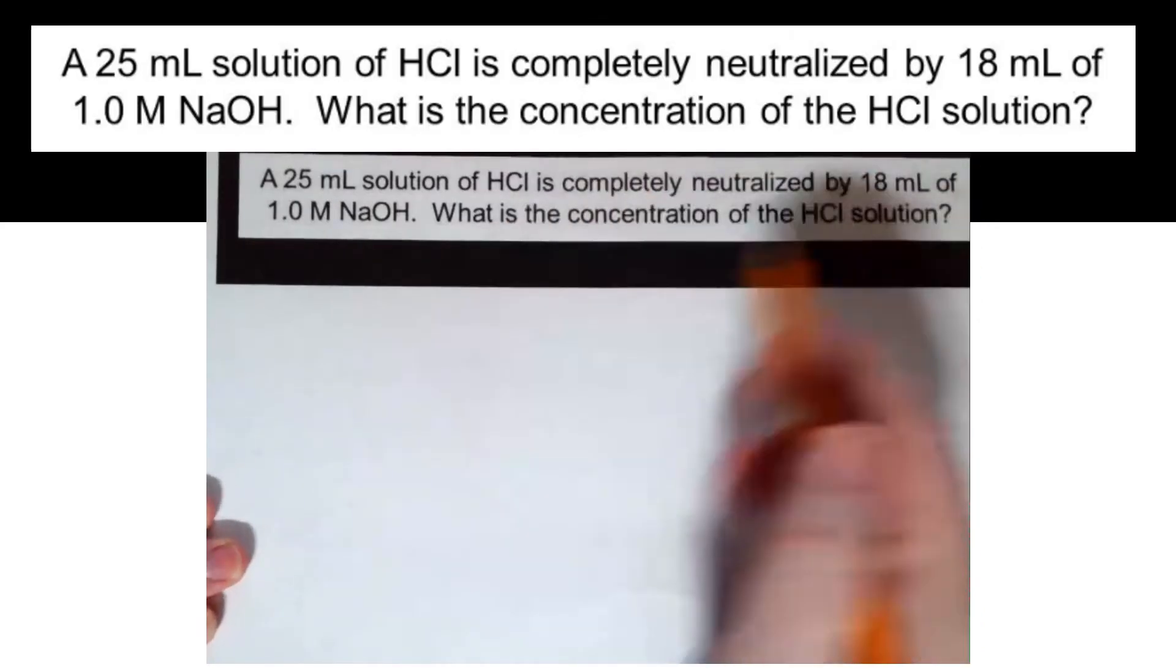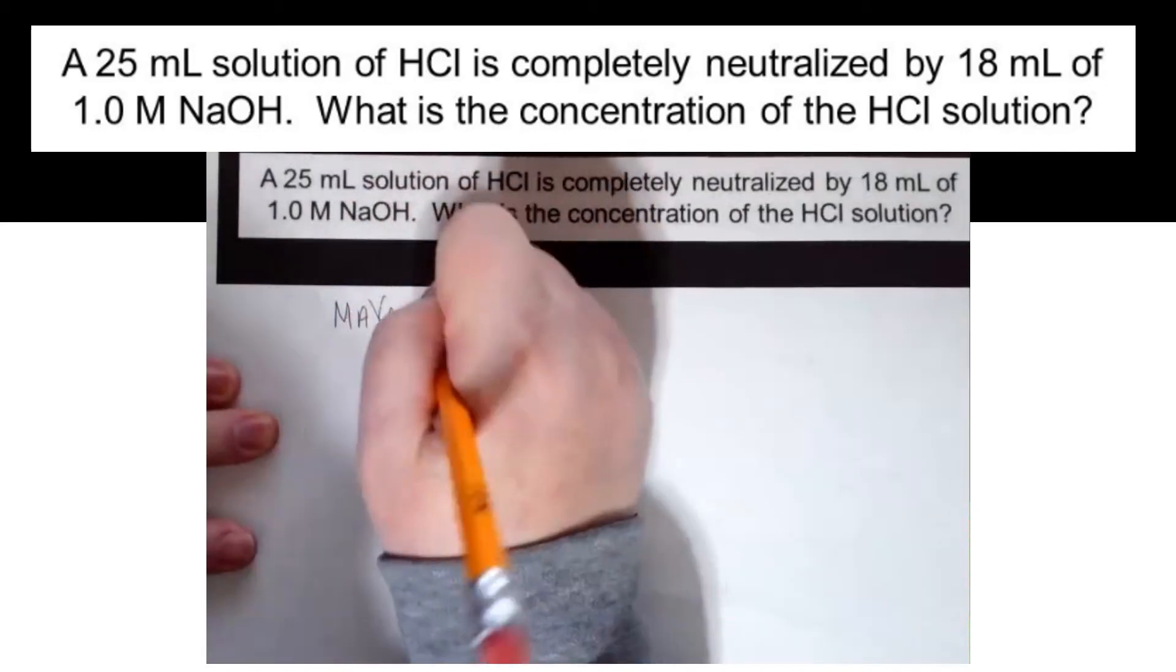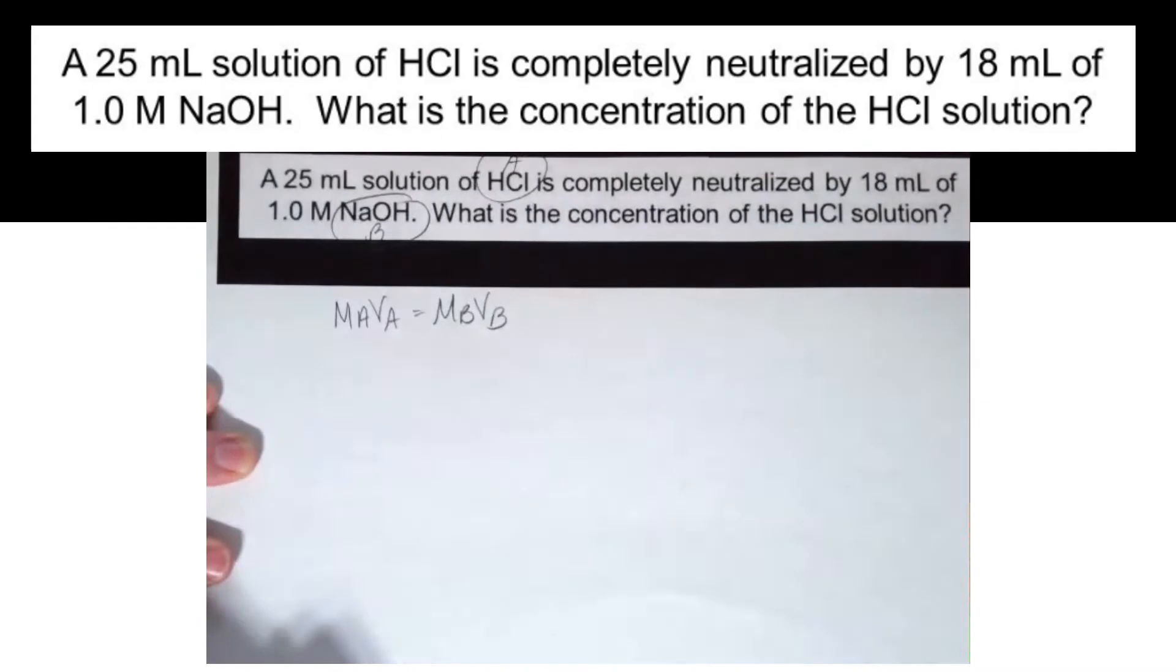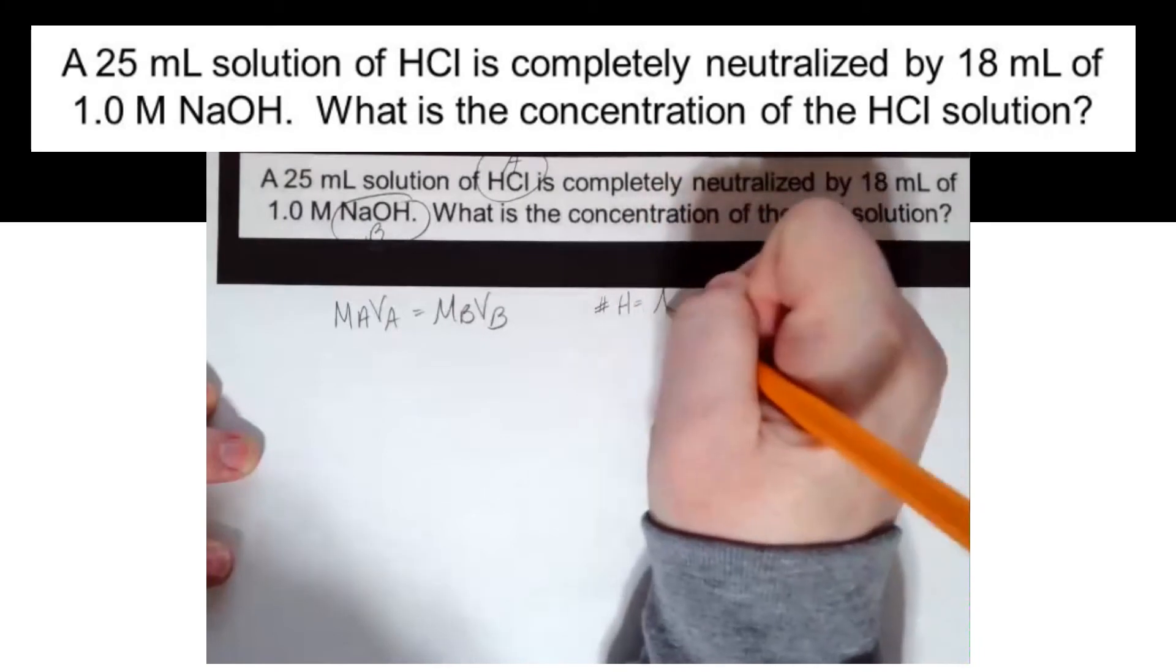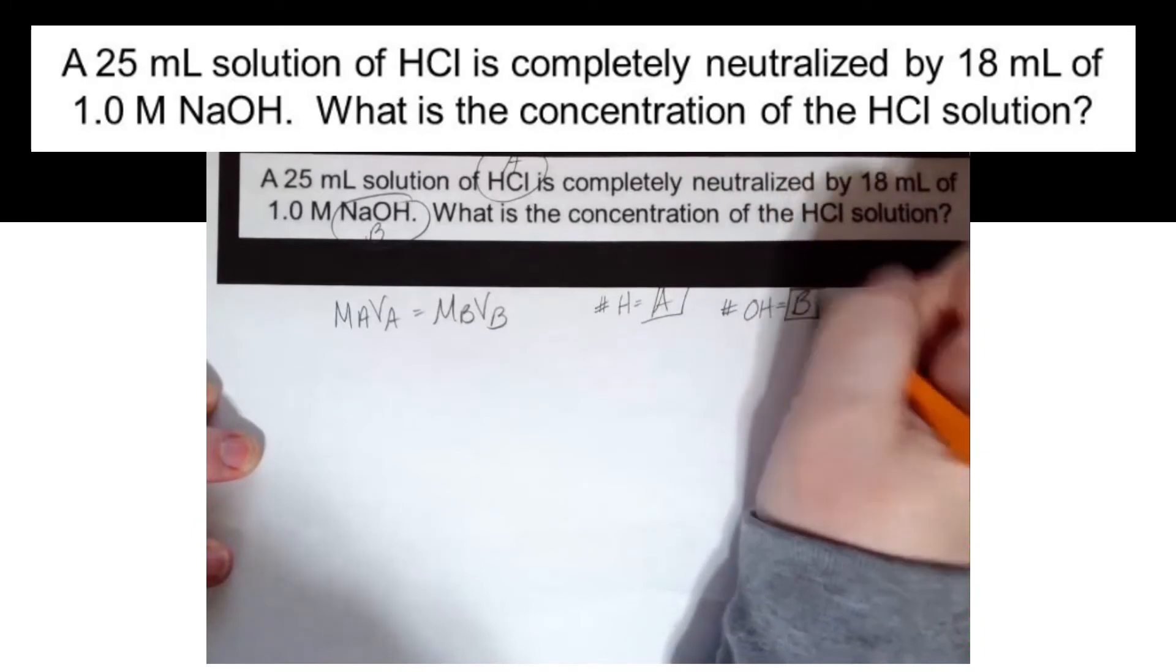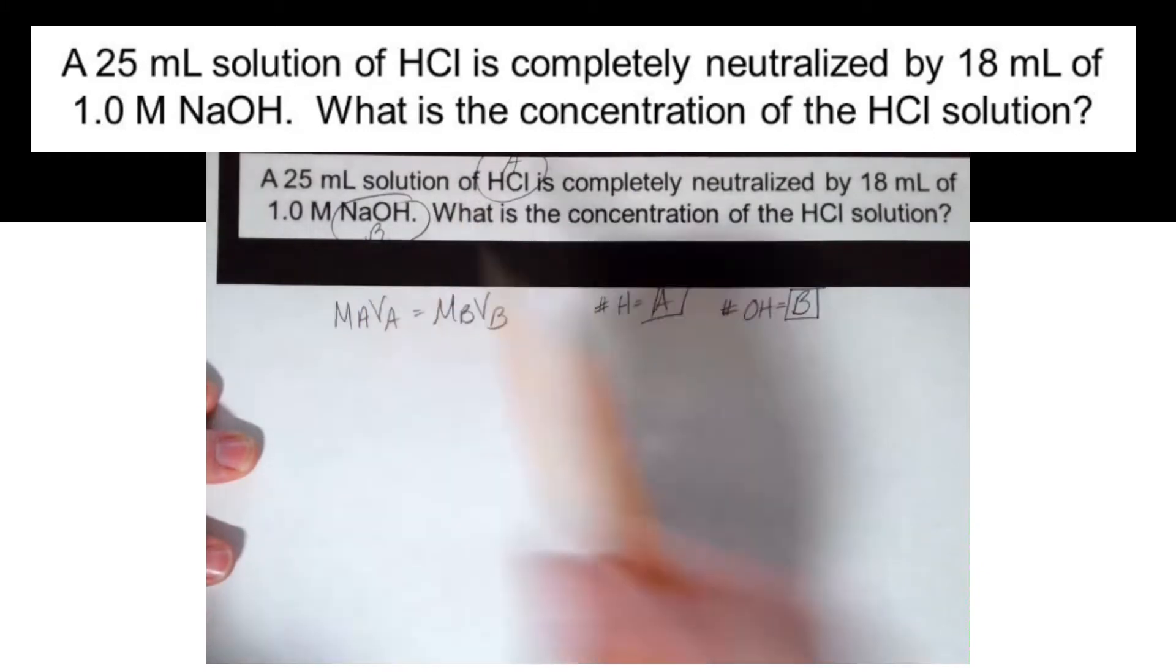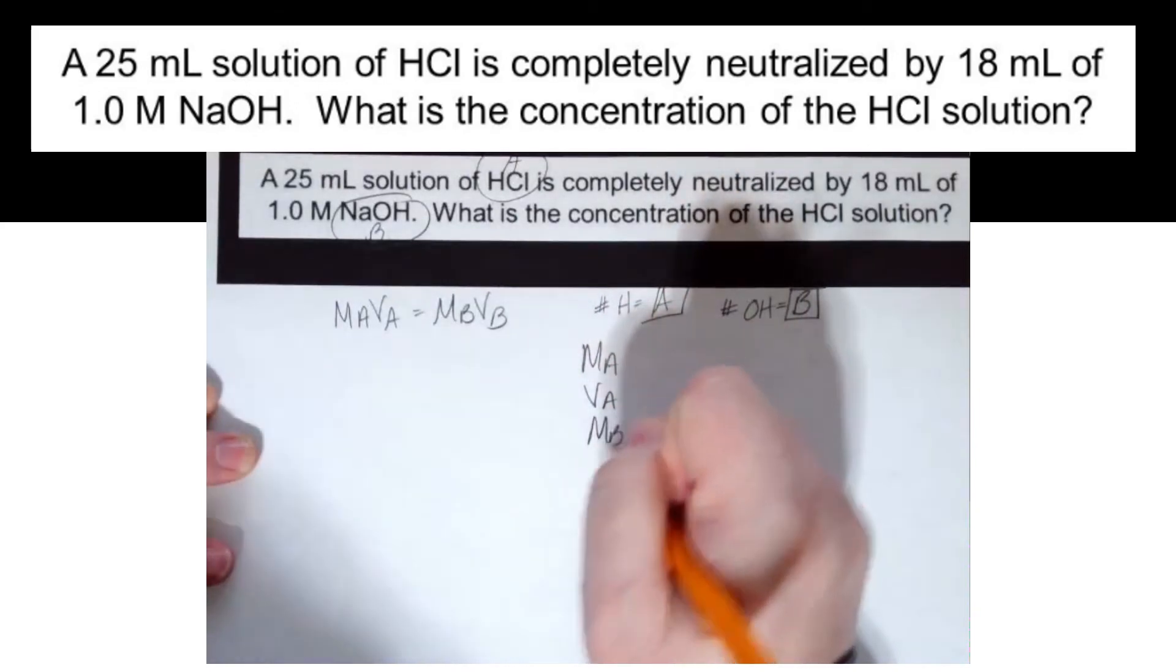Let's look at the next one. So let's write my formula. MAVA equals MBVB. Let's find the acid. Let's find the base. Now I need to remember that the number of H's has to do with the acid and the number of OH's has to do with the base. It only matters if it's not one. So how many H's are in this formula? One. How many OH's are in this formula? One. So now I don't have to worry about it. I can just make my list of variables. MAVA and MBVB.